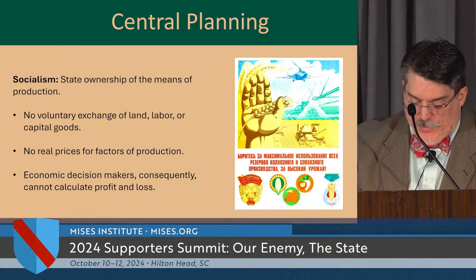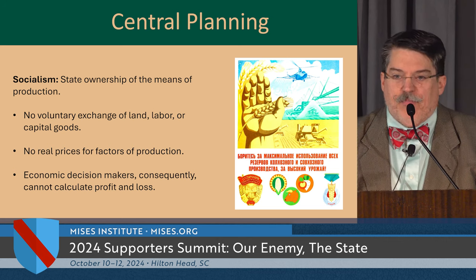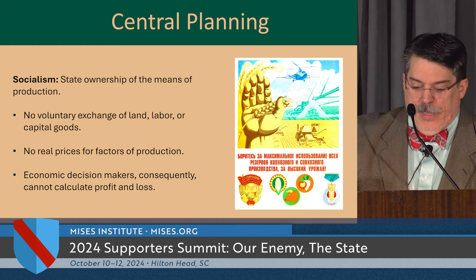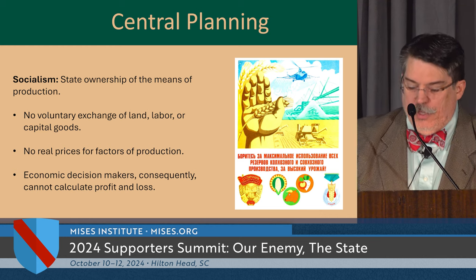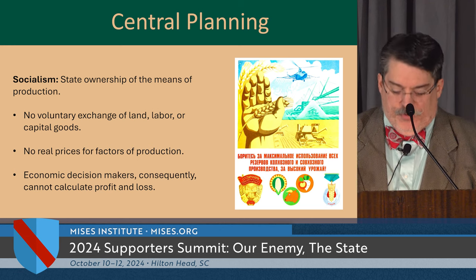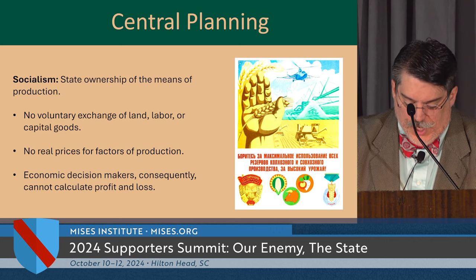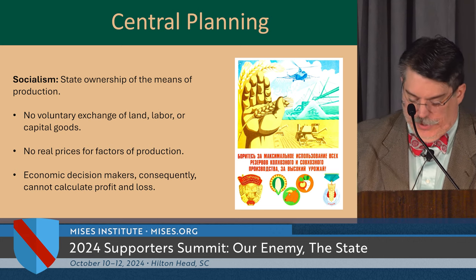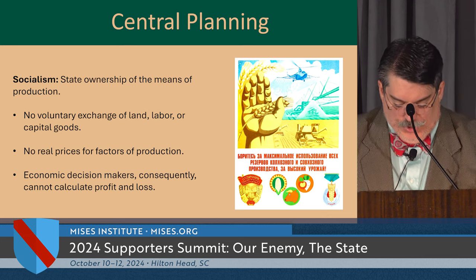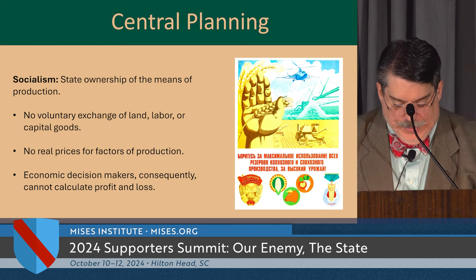Therefore, economic decision makers cannot calculate profit and loss. They have no way to make meaningful comparisons between the expected selling price of the product and the sum of the costs of the factors of production. So instead of a prosperous socialist economy, the exact opposite is the case: socialism does not breed prosperity. Socialism breeds cultural declension, barbarism, poverty, and death.